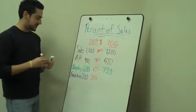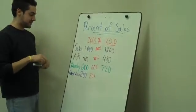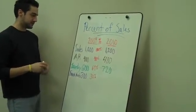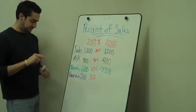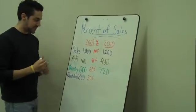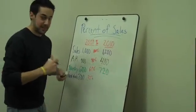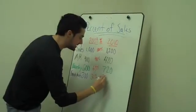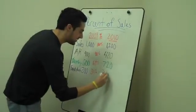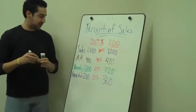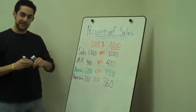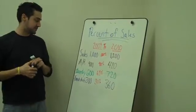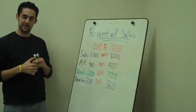Now, projecting out your fixed assets, 30% of your sales, that would be 360. And this is how you can project out balance sheet items through using the percentage of sales method.